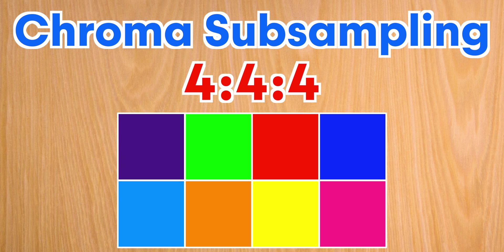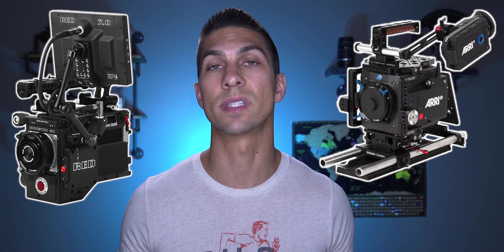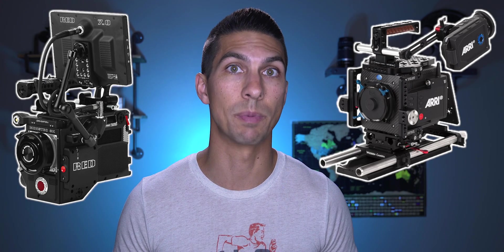In the case of 4:4:4, no chroma subsampling is taking place. A 16x9 4K image has nearly 8.3 million pixels, and when using the 4:4:4 color option, you're recording all luma and chroma — brightness and color information — for every one of those pixels. As you can imagine, this takes up a lot of space, and this color option is typically found in cinema cameras with raw recording capabilities.